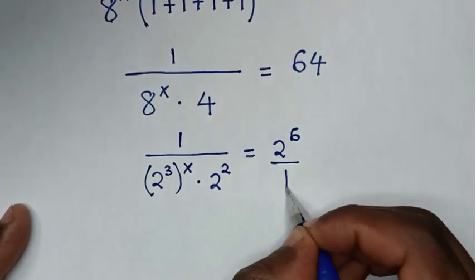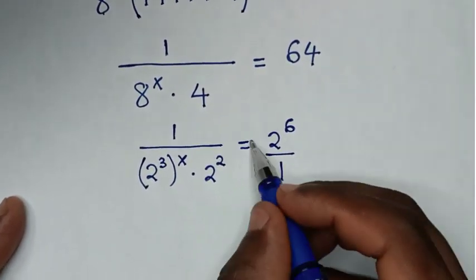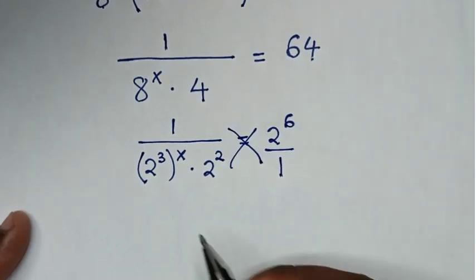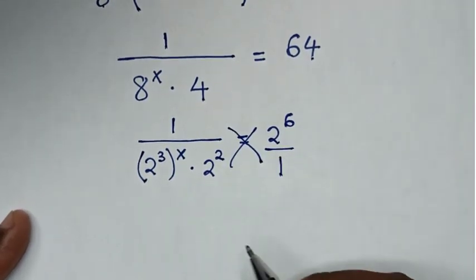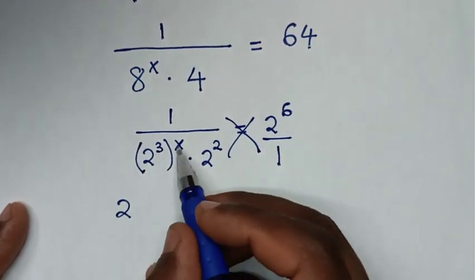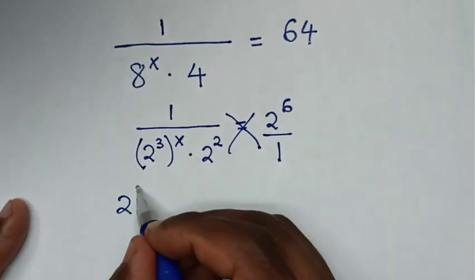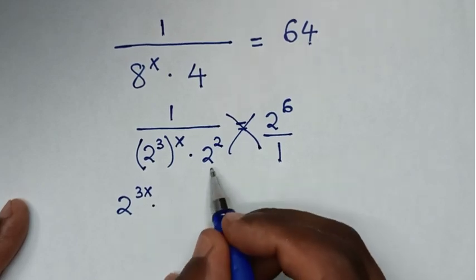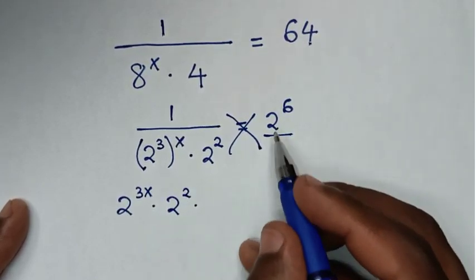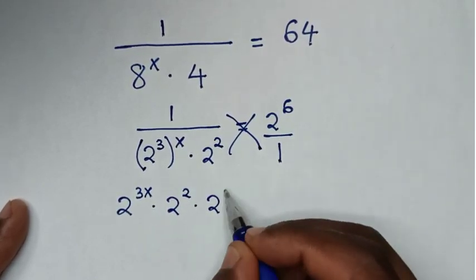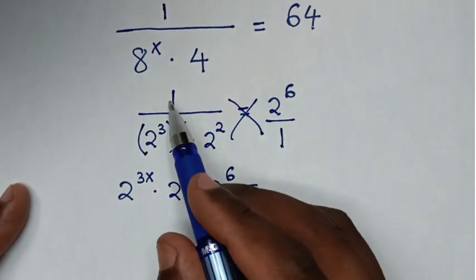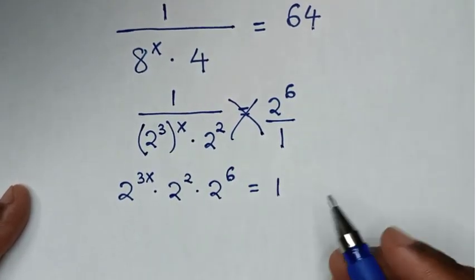In the next step, we have the same base, so we cross-multiply. We take 2^(3x) times 2^2 times 2^6 on one side, equal to 1 times 1, which is 1. Here 2^(3x) comes from (2^3)^x giving a power of 3x.